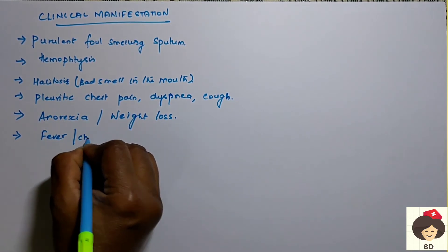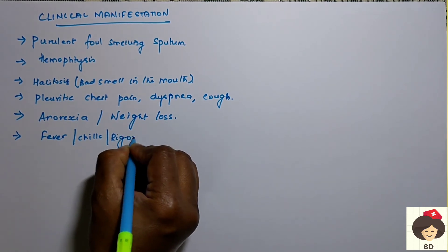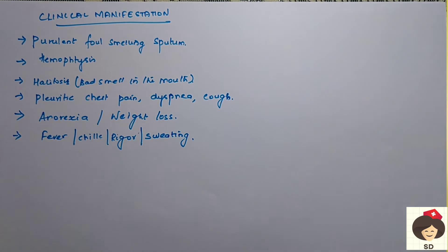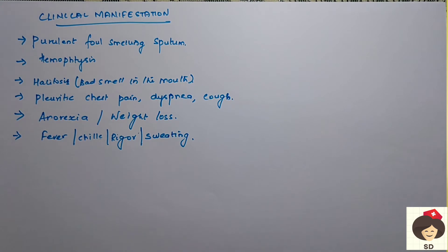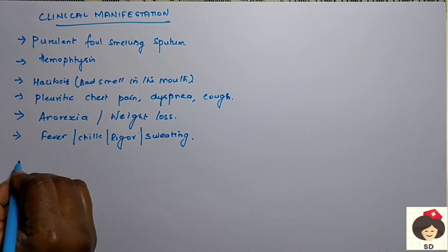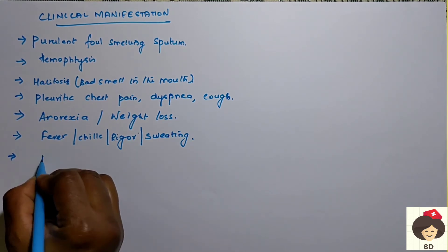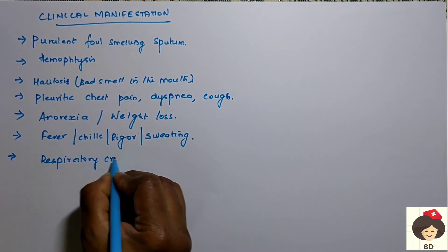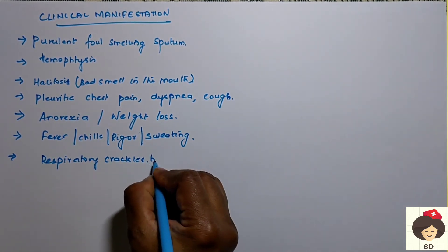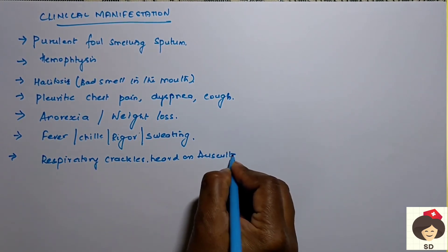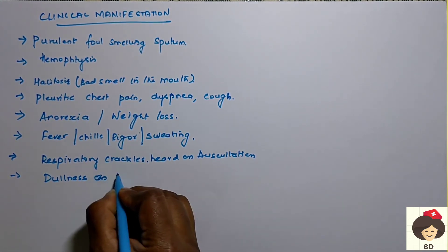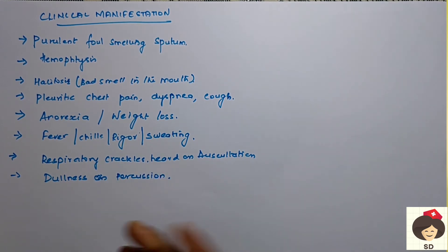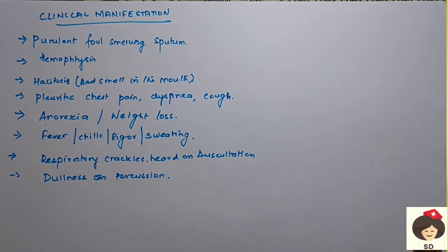Because of anorexia, the patient can go for weight loss. Since it is an infection, the patient will have fever, chills, rigors, and sweating — the body increases its temperature set point to eliminate microorganisms. When you auscultate the lungs, there will be respiratory crackles — an abnormal respiratory sound. When you percuss the lung fields, you will feel dullness due to inflammation, infection, fluid accumulation, and cavities.